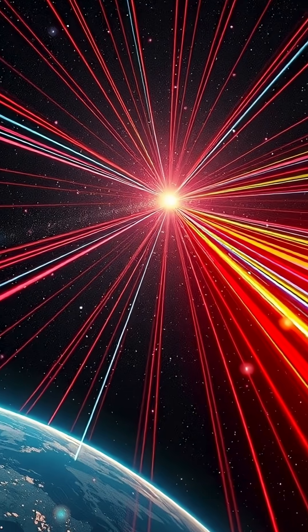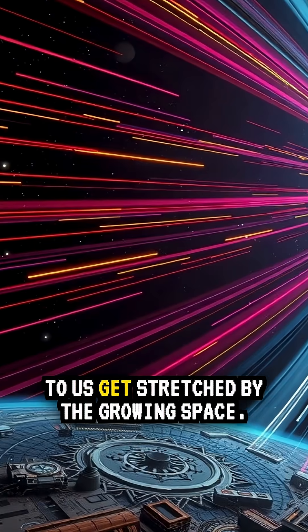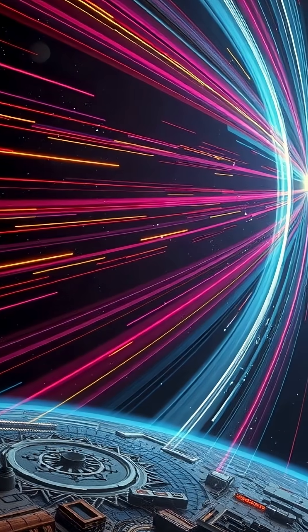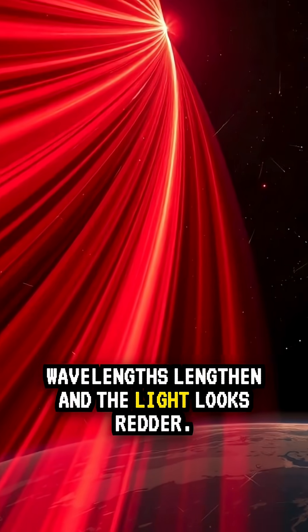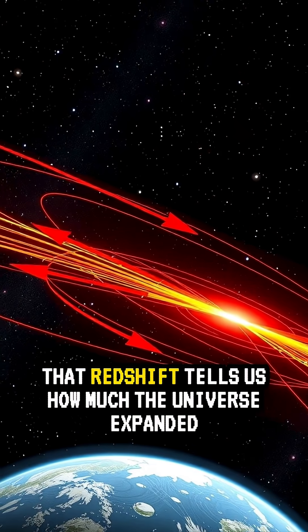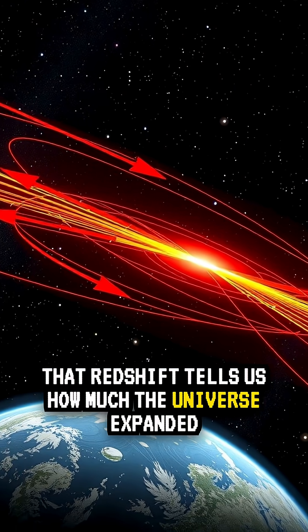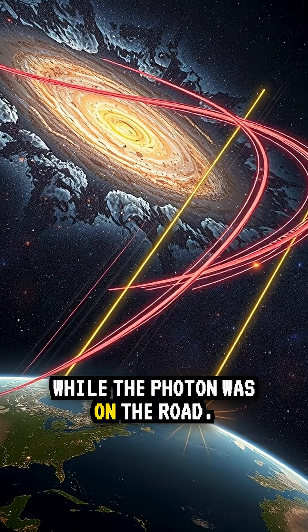What do we actually see? Light waves traveling to us get stretched by the growing space. Their wavelengths lengthen, and the light looks redder. That redshift tells us how much the universe expanded while the photon was on the road.